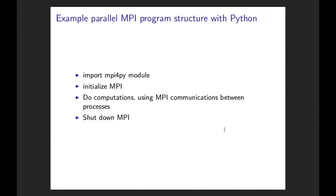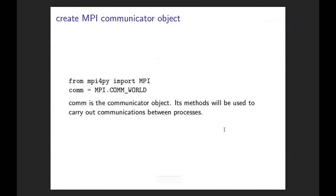What does an MPI program in Python look like? Let me give you the general skeleton. First you import the MPI4PY module. Then you initialize MPI. Then you do your computations, using MPI communications to exchange data as needed. Once you are done, you shut down MPI. To do this, I first create my MPI communicator object, and then I will be using the methods of this object for actual communications.